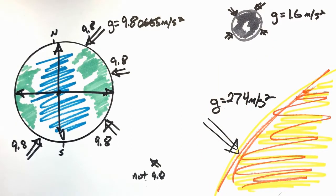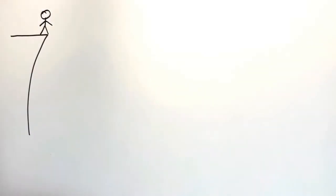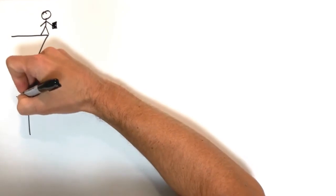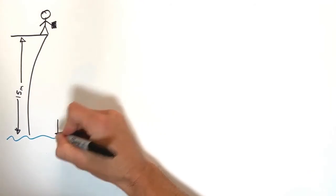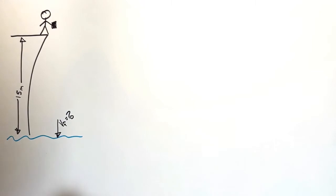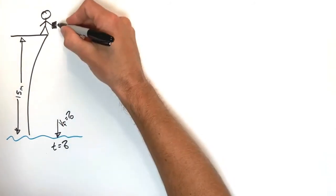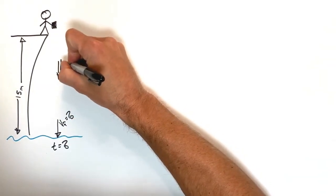Let's take a look at some examples to see how to apply the kinematic equations to freefall. We'll start with a person standing on top of a cliff. This person is going to drop a block off the top of a 15-meter-high cliff. That block is going to fall all the way down into the water. We're going to solve for the velocity at which the block is traveling when it strikes the water, and also how long it takes. Realize this block is in freefall, so the entire time it's moving from the top of the cliff to the bottom, it's accelerating downward at 9.8 meters per second squared.